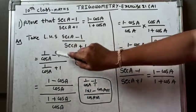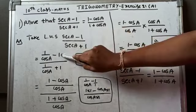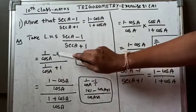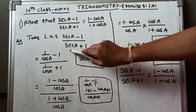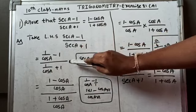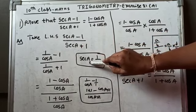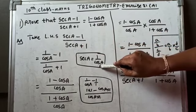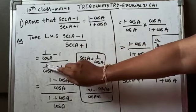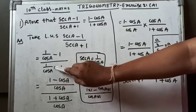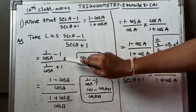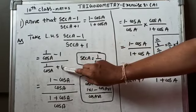The minus and 1 remain the same. In the denominator, we also replace sec A using the formula sec A = 1/cos A. So the denominator becomes (1/cos A) + 1.